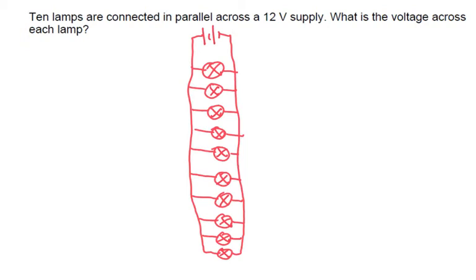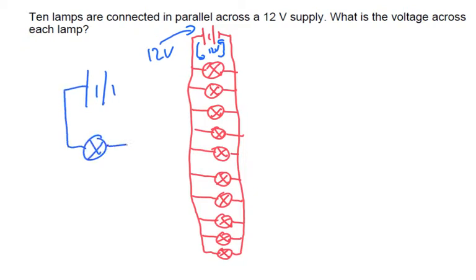Here are my ten lamps all connected in parallel. Because each individual lamp is its own loop, if the power supply is 12 volts, then the voltage across each lamp is also going to be 12 volts, because they're their own individual loop. Each loop with each bulb is like this — you've got 12 volts EMF, 12 volts PD. So that's the answer: it is 12 volts.